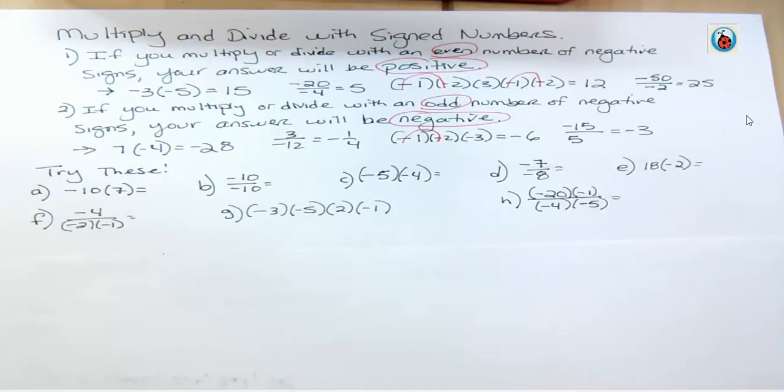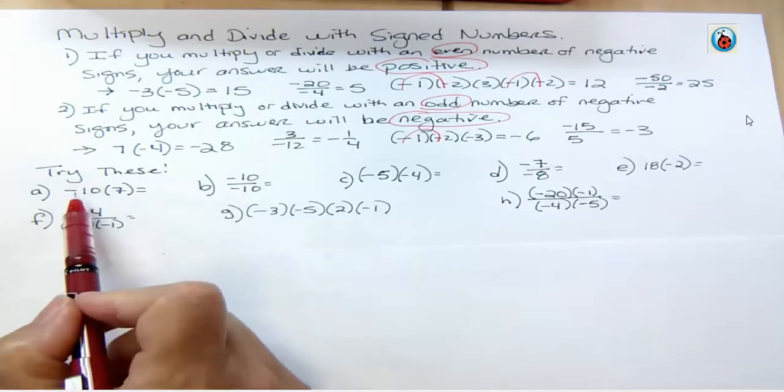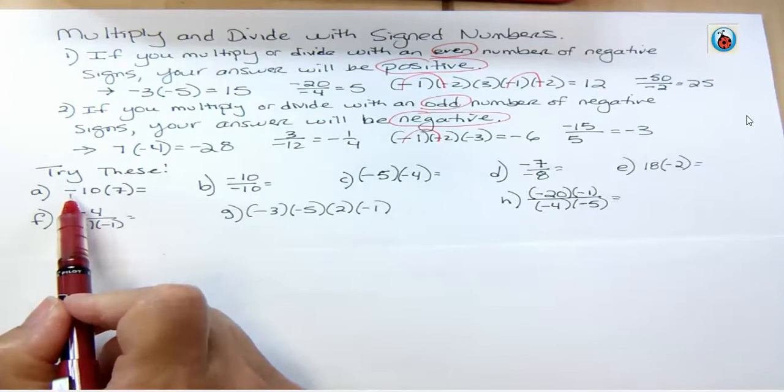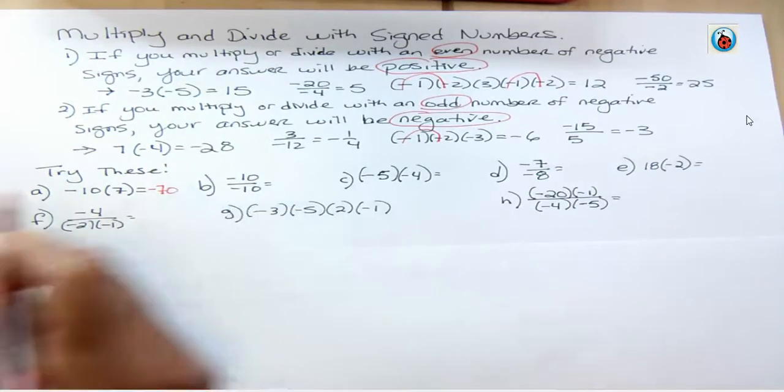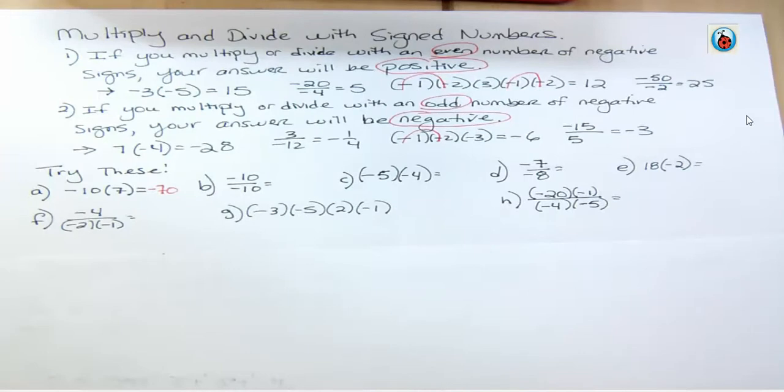So for the first one, we're multiplying. We have an odd number. There's nothing to cancel that out. So you should have gotten negative 70. I've made these numbers to where you could do these in your head. You're not trying to use the calculator here. You're trying to get the rules down. And we're just using easy numbers so that you don't have to spend time putting that into the calculator.